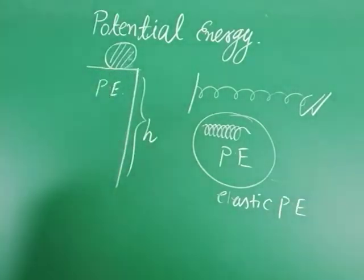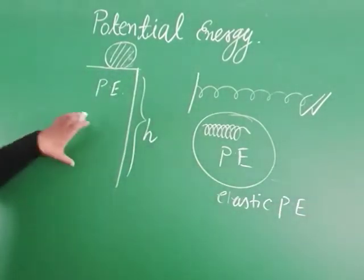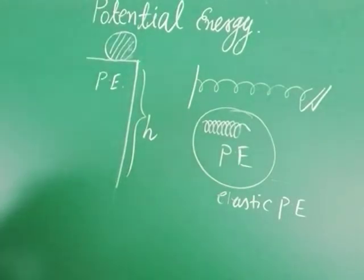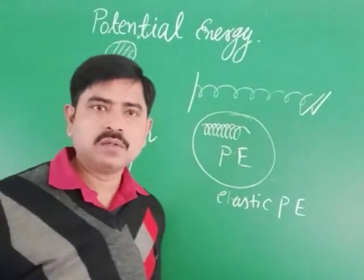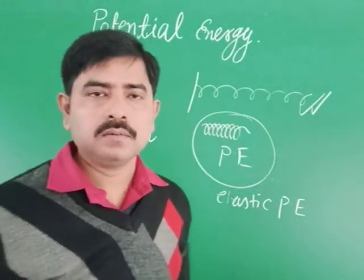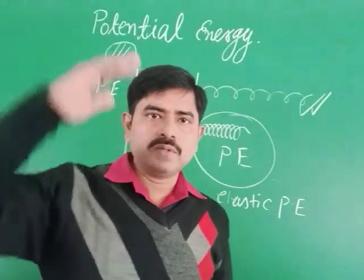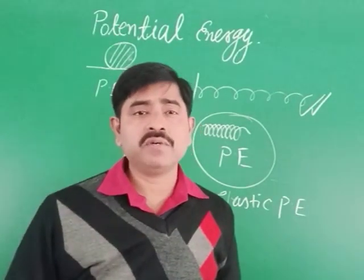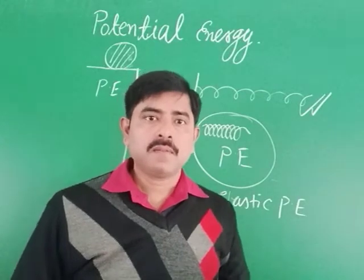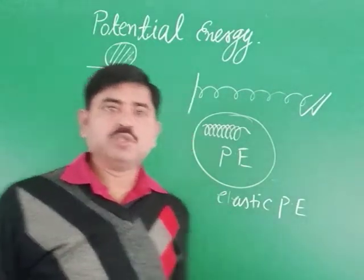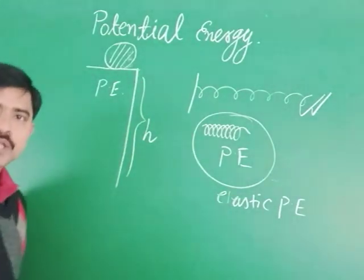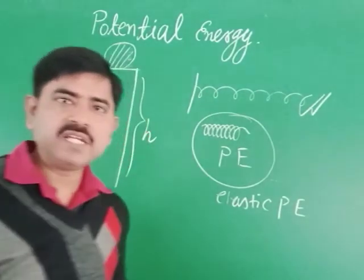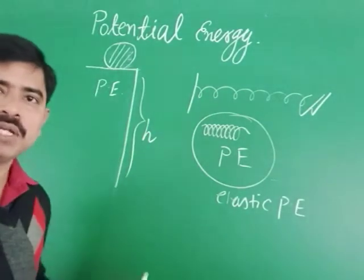On the other hand, objects raised to a height — such as a raised hammer, water raised to a height, or water stored in very high dams — possess a different type of potential energy, known as gravitational potential energy.